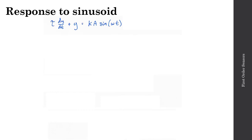Here is the differential equation describing the time response. And instead of the step input, we now have a sinusoidal input with an amplitude a and a frequency omega. I'm also going to add an initial condition, so y at time t equals zero is going to be equal to y sub zero. And I'm going to start this sinusoidal input at time t equals zero.